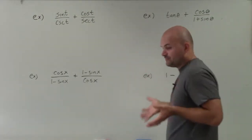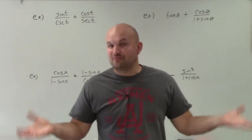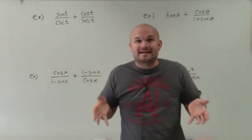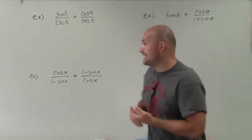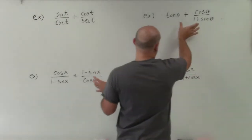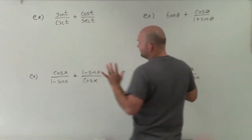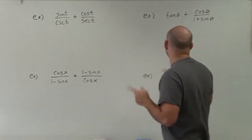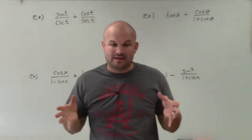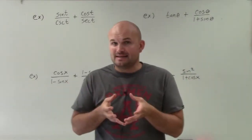So basically, when we're dealing with rational expressions — or another way to say it, fractions — the best thing we want to do is eliminate the fractions. To do that, when we have two rational expressions with addition or subtraction, we're going to want to combine them.